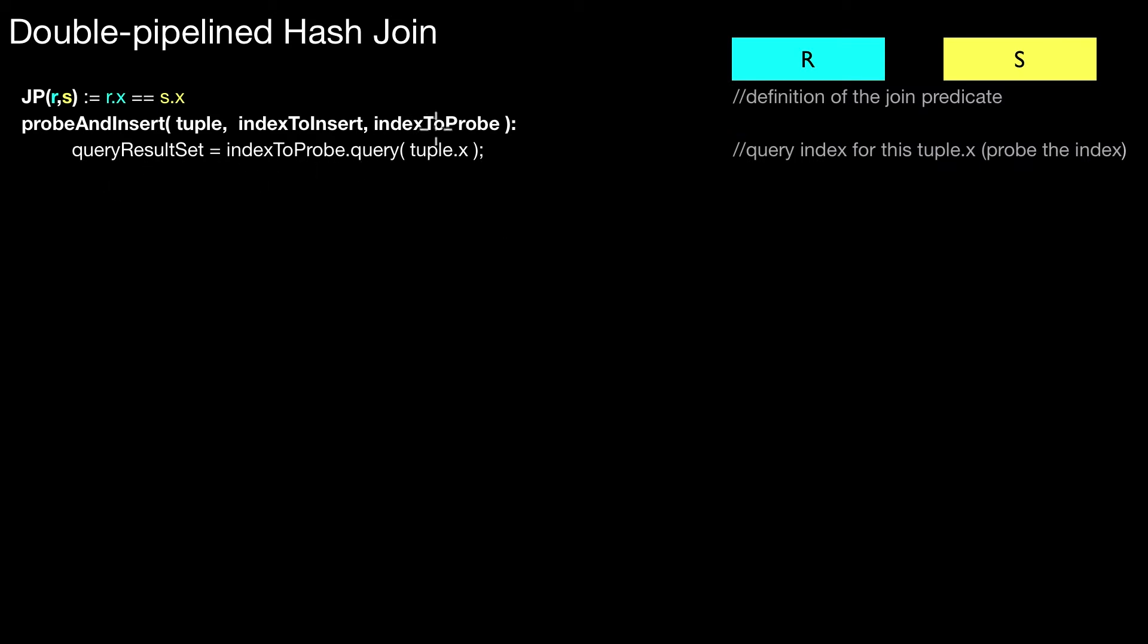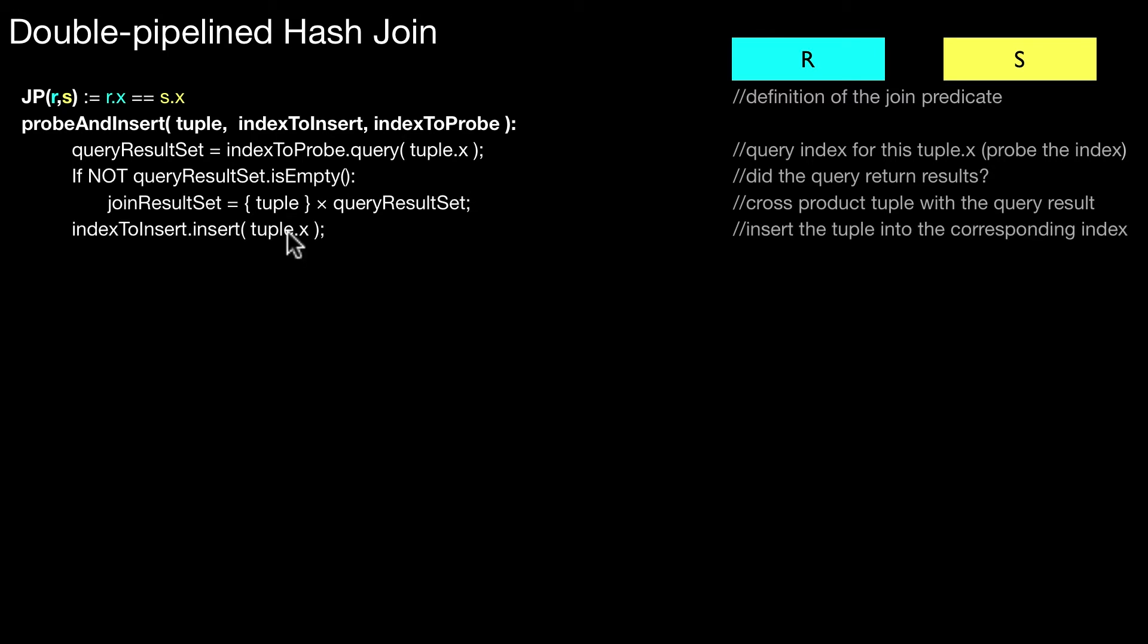Here you see it. We probe this index here. We query the index with a specific key, the join key. We are talking about an equi join. Here we check whether that query result returned anything. Only then we produce additional join results. We create this join result set, the tuple cross product the query result set. Here we do the actual insert belonging to the hash table.